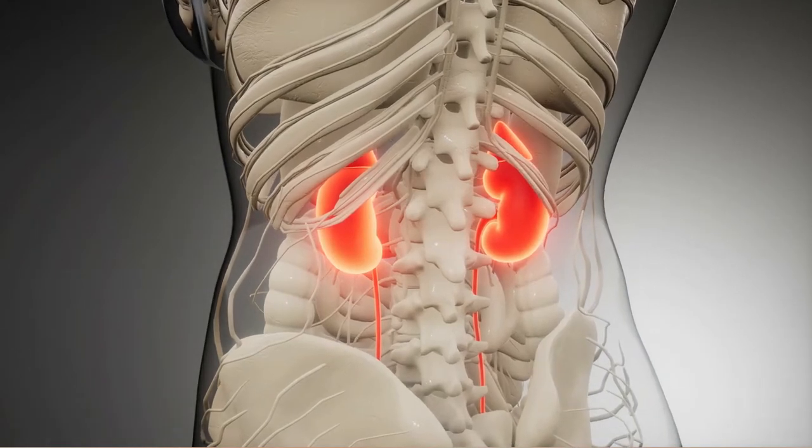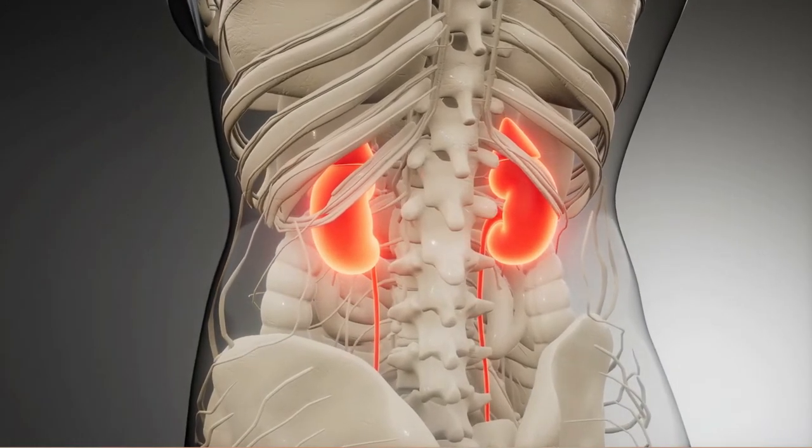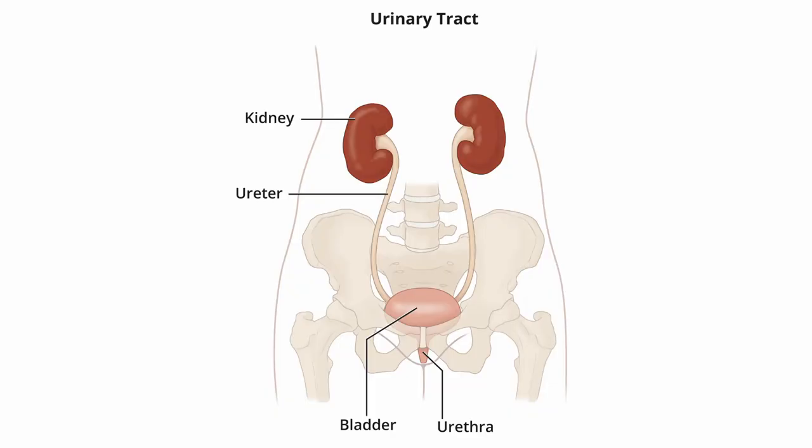The kidney is a part of the urinary tract. The urinary tract comprises the kidney, the urethra, the bladder, and the urethra.